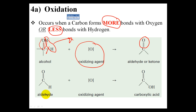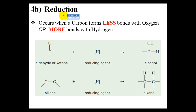Similarly with an aldehyde, which already has the C=O double bond — two bonds with oxygen — we can oxidize it by removing this hydrogen, and we are left with a hydroxyl group, giving us three oxygen bonds whereas before we only had two. The exact opposite is a reduction reaction — instead of forming more bonds with oxygen you form fewer, and instead of fewer bonds with hydrogen you form more bonds with hydrogen.